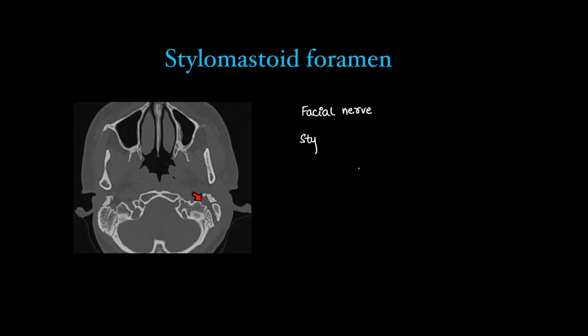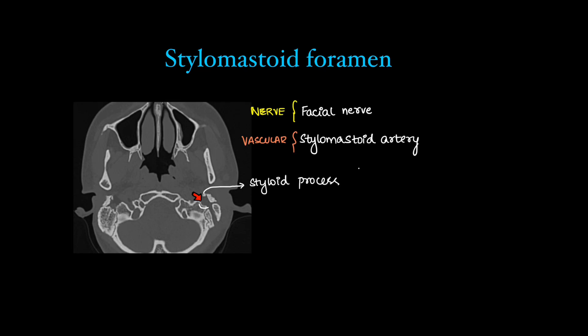The stylomastoid foramen contains the facial nerve and the stylomastoid artery. The styloid process and mastoid bone are the landmarks. A detailed video of the facial nerve on HRCT temporal bone is available on this channel — there is a full facial nerve course in detail.